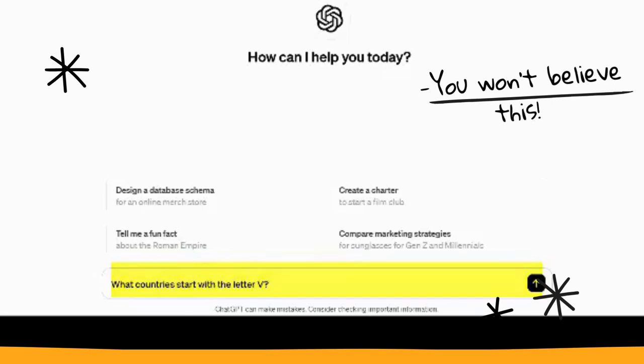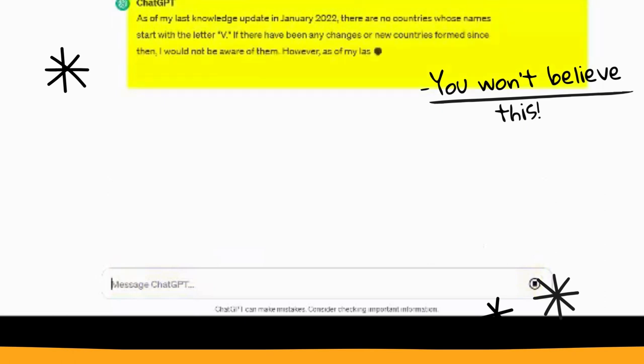in the world start with the letter V? And it says basically there are none, there are no countries that start with the letter V.